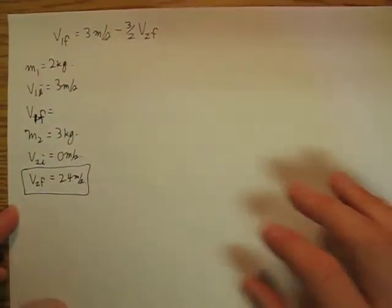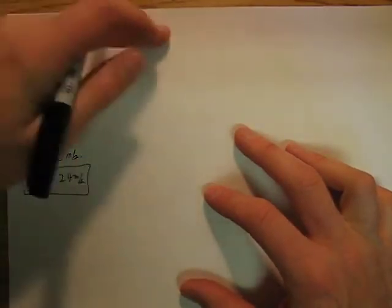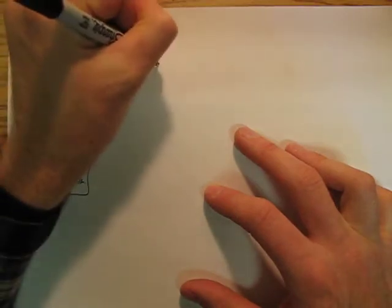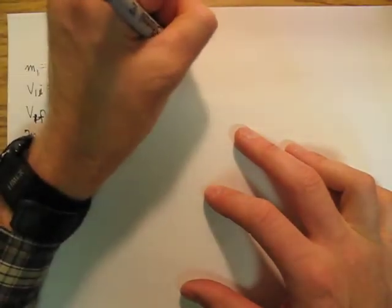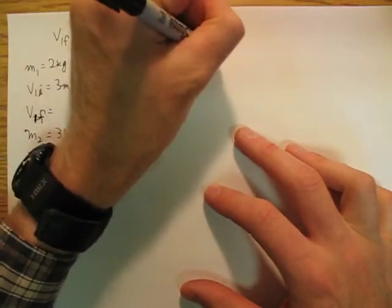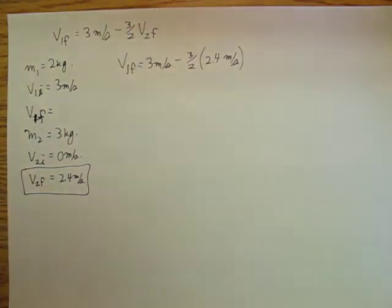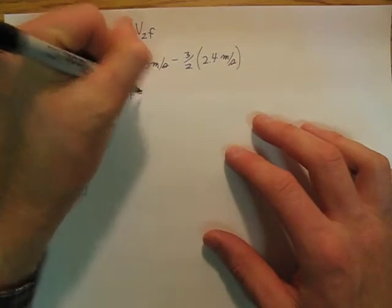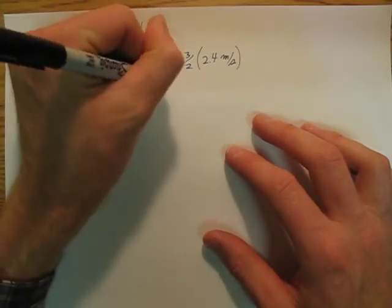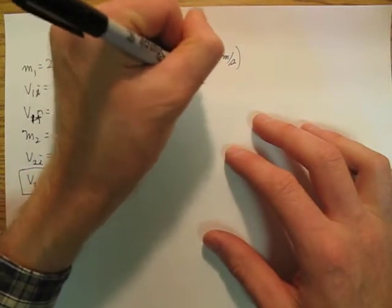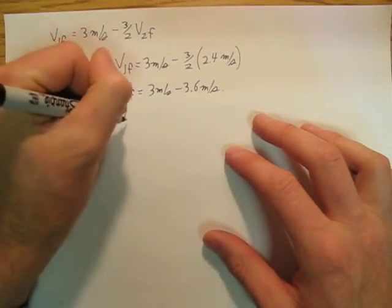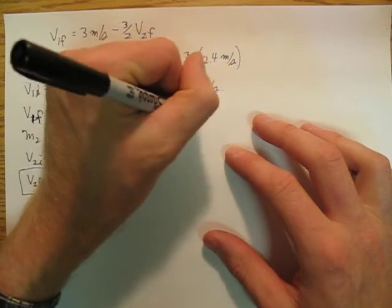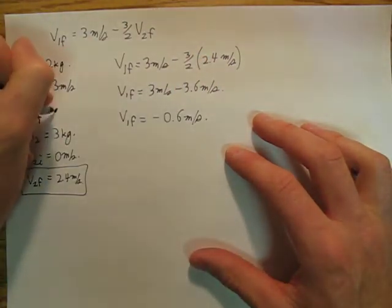And now what we're going to do is we are going to go and just plug in, very simple, 3 meters per second minus three-halves of 2.4 meters per second. And so v_1f is going to be equal to 3 meters per second minus 3.6 meters per second, so v_1f is going to equal negative 0.6 meters per second.